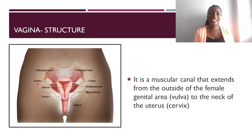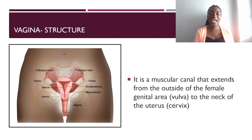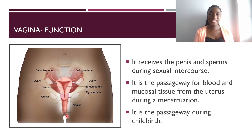The vagina is a muscular canal or opening that has the ability to stretch — mostly during childbirth to facilitate the pushing out of the baby. It extends from the outside of the female genital area (the vulva) to the neck of the uterus, which is the cervix. The vagina receives the penis and sperm during sexual intercourse. It is also the passageway for blood and mucosal tissue from the uterus during menstruation, and the passageway for the baby during childbirth.